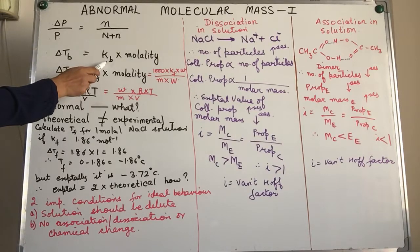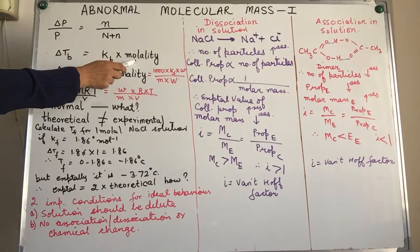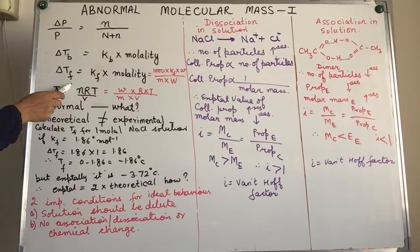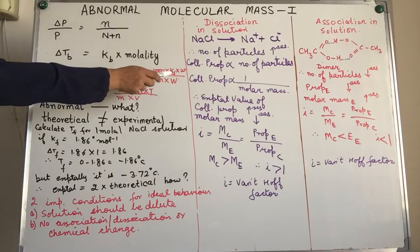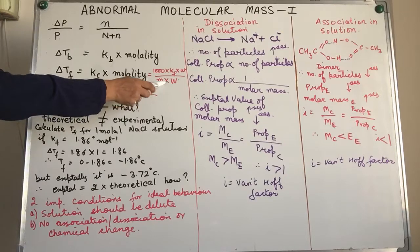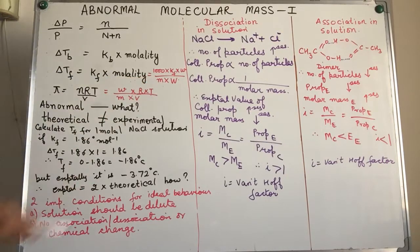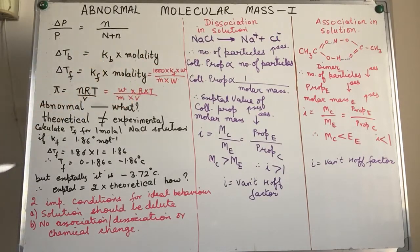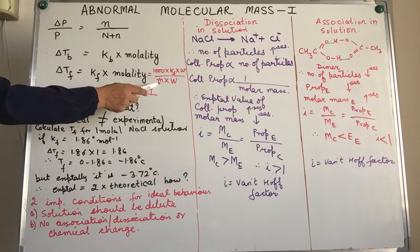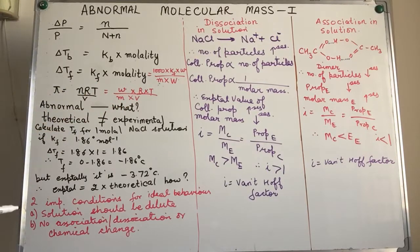Elevation in boiling point is the ebullioscopic constant (Kb) multiplied by molality. Similarly, depression in freezing point is Kf multiplied by molality. If we expand the term for molality, we get: 1000 × Kf × weight of solute, divided by molar mass of solute × weight of solvent. The colligative property is dependent on the number of moles of solute, or inversely proportional to the molar mass of the solute in solution.